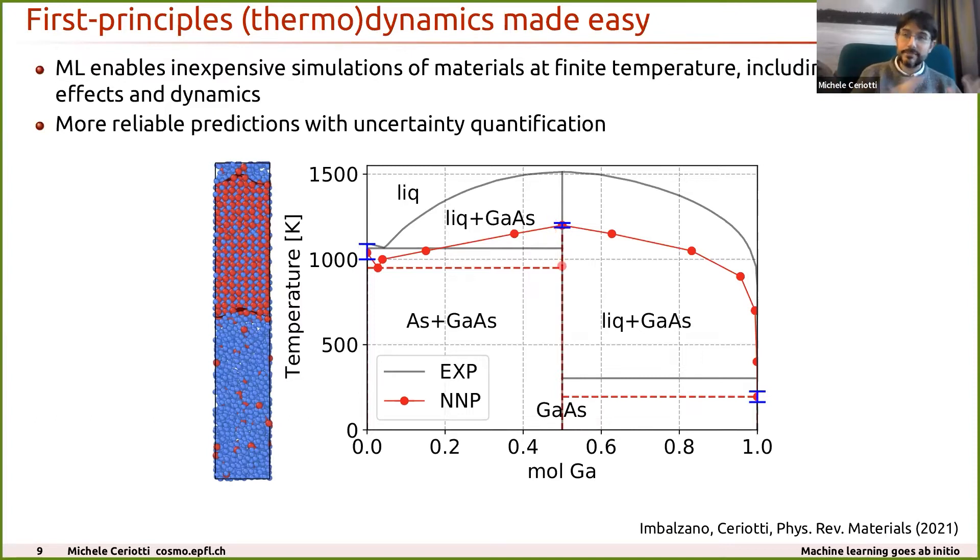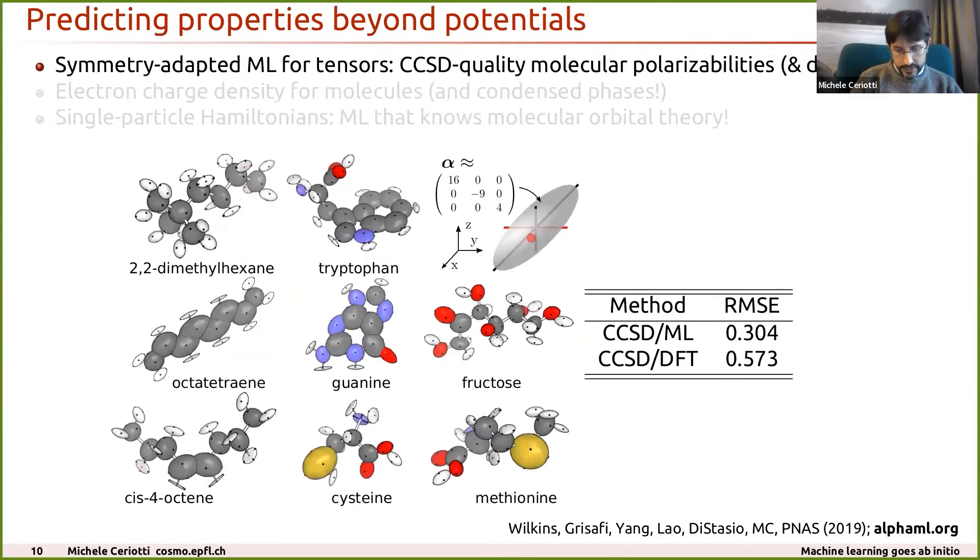Something you might notice here is that there is a considerable discrepancy between the melting point predicted for gallium arsenide and the experimental value. At this point, one should ask, is this the fault of the machine learning algorithm or the fault of the reference electronic structure calculations we're using to train it? To address this question without having to do a first-principle calculation which would be prohibitively expensive, we have developed an uncertainty quantification scheme that allows us to put error bars on every quantity.